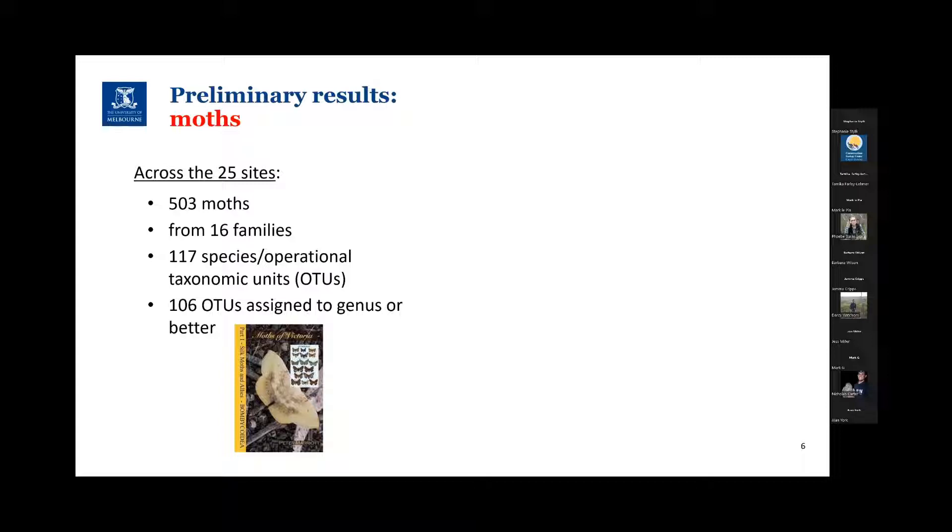Of that 117, about 106 could be accurately assigned to genus or to species. That again is important because there are lots of moth bottoms in Victoria, and there's some very good ecological data around. So giving names to these species that we have allows us to understand aspects of their ecology and fire response.